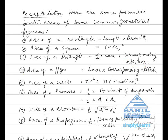Number 5: area of a circle is equal to π r squared, which is π into radius squared. Number 6: area of a rhombus is 1/2 into product of diagonals.